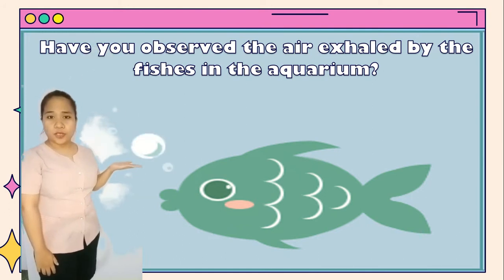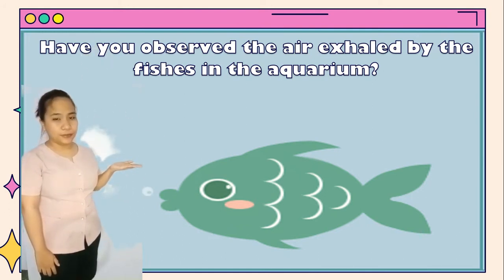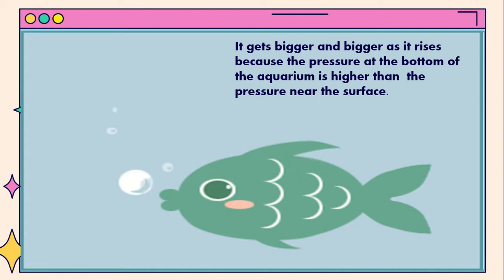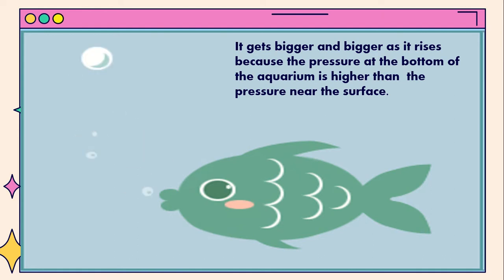Have you observed the air exhaled by the fishes in the aquarium? It gets bigger and bigger as it rises because the pressure at the bottom of the aquarium is higher than the pressure near the surface. From this example, the variables present are the volume of the air exhaled by the fish and the pressure inside the aquarium.